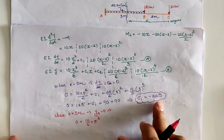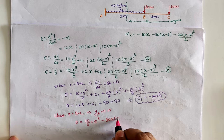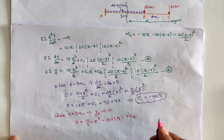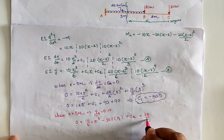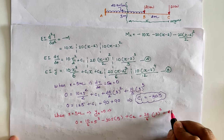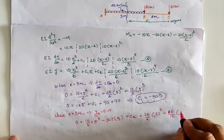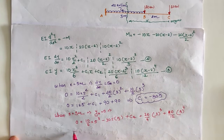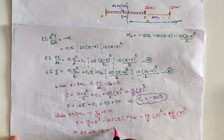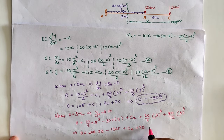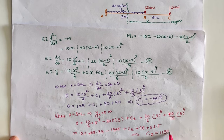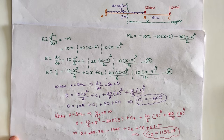With C1 = minus 305, we now apply the second boundary condition at x = 5, deflection = 0. Substituting into the deflection equation: minus 305 times 5 plus C2 plus 20 by 6 times (5 minus 2) cubed plus 10 by 12 times (5 minus 2) to the 4th. Solving this gives C2 = 1159.17.